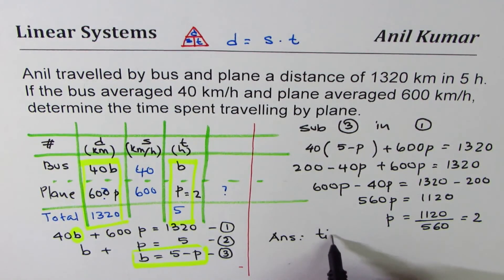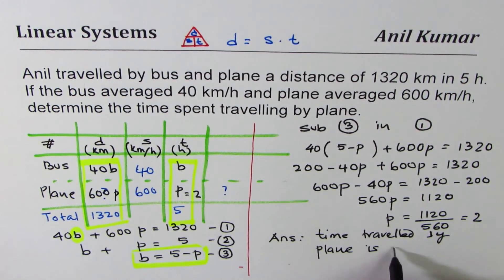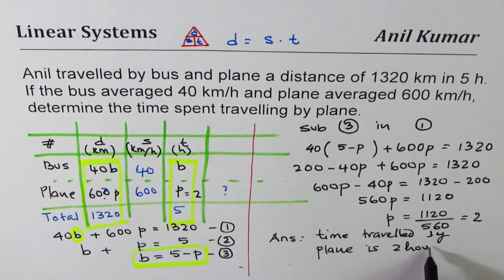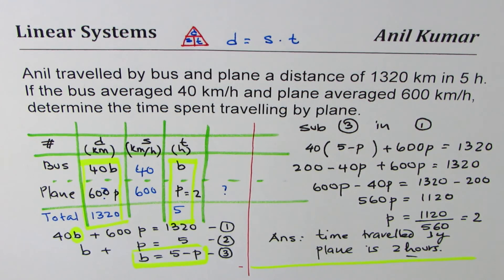The time traveled by plane is 2 hours. It's very important to include units in word problems. I'm Anil Kumar, and I hope that helps you understand a very simple process by which you can always solve a linear system involving distance, speed, and time. Feel free to share my videos and write comments. Thank you and all the best.